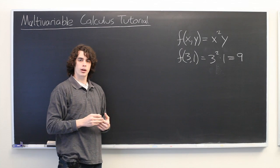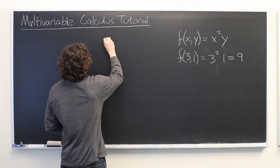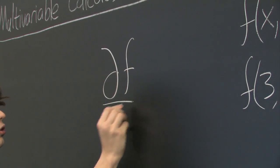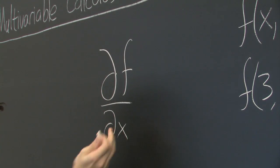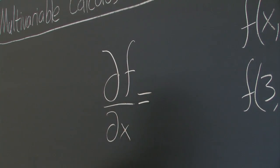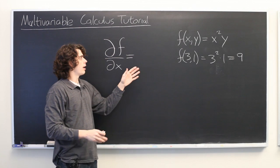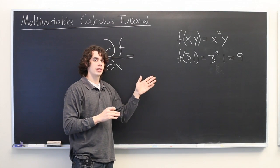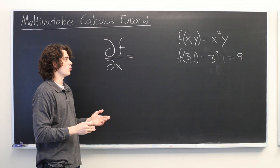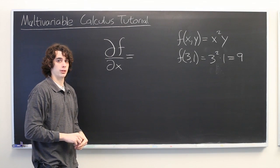First, there's the concept of a partial derivative, which is indicated with this symbol — ∂f/∂x, for example. What we want to do here is take the derivative of f with respect to x, and for the time being we're going to pretend that y is just a constant, which essentially allows us to use the same differentiation rules that we would use in single variable calculus.